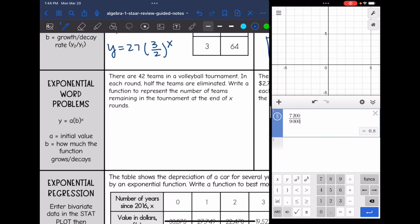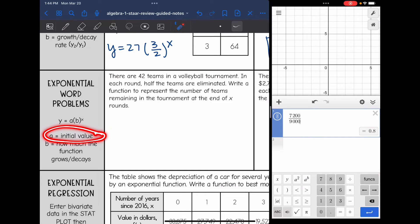Okay, in word problems, a is the y-intercept. So it's the initial value in a word problem. And then b is how much the function grows or decays. So you just need to read the problem to really figure out how much it is growing or decaying. So as I'm reading the problem, you think about what the initial value is and what the growth or decay rate would be.